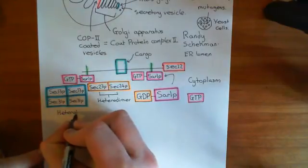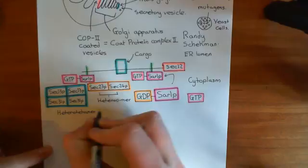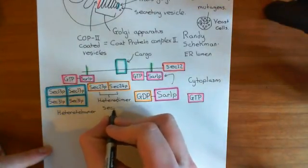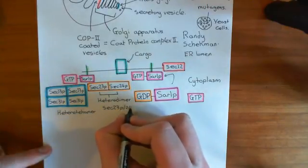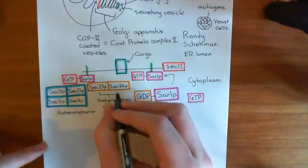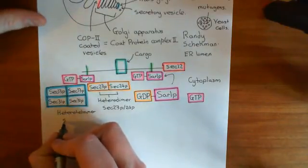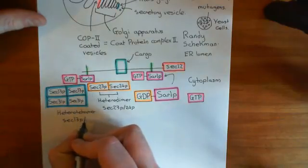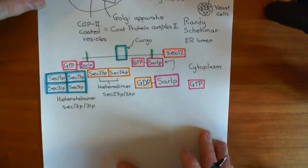So these protein complexes often are referred to in shorthand as the sec-23p-24p heterodimer. So you just call this the sec-23p-24p heterodimer, and you'd call this the sec-13p-31p heterotetrimer. So those are the names that you'd use in short.